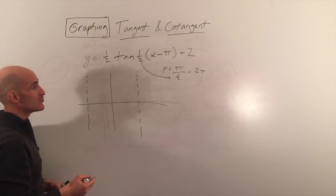That's the parent graph. Now we shift it right pi and up 2. On our scale, pi equals two steps, so everything shifts two steps to the right and two steps up — including the asymptotes and key points. Each key point moves right two and up two.